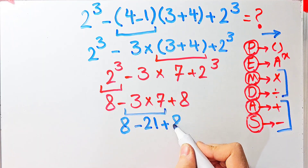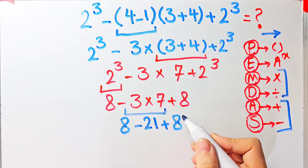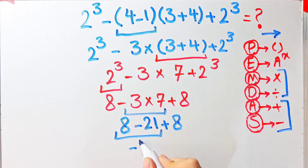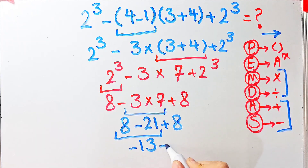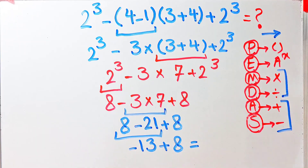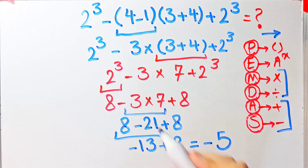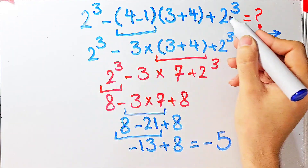8 minus 21 equals negative 13. Now we have negative 13 plus 8, and negative 13 plus 8 equals negative 5. The final answer of this question is negative 5. To get the right answer you must follow the PEMDAS rule.